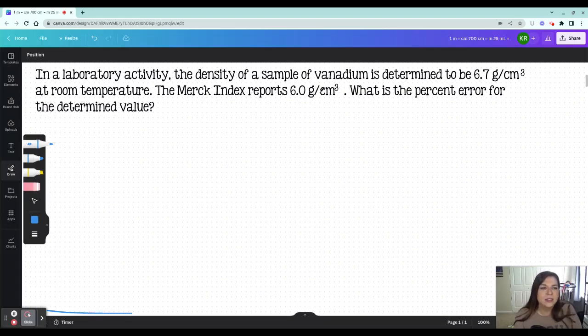in a lab activity, the density of a sample of vanadium is determined to be 6.7 grams per cubic centimeter at room temperature. The Merck index, the accepted value, reports 6 grams per cubic centimeter. What is the percent error?